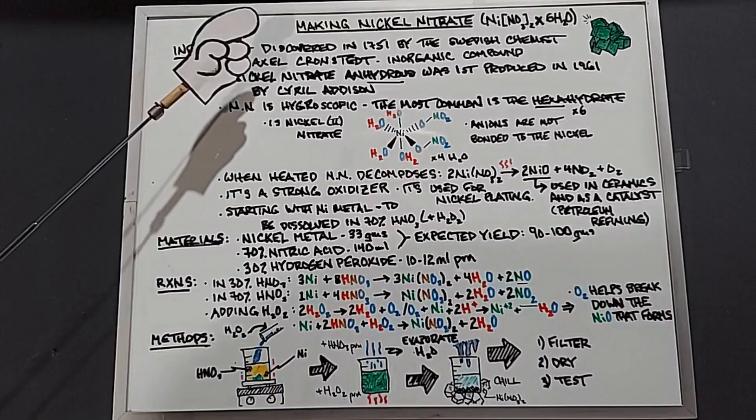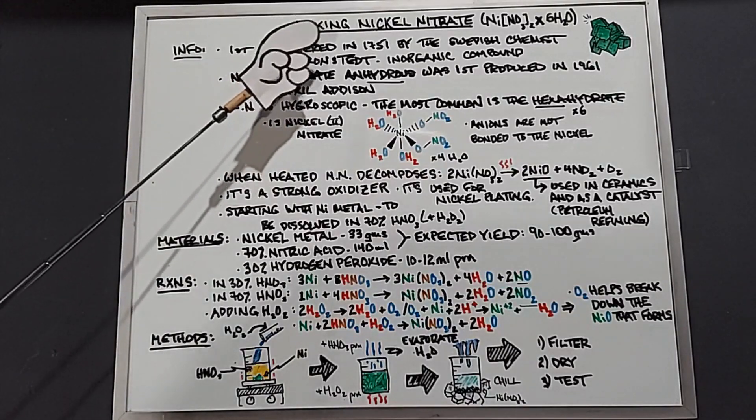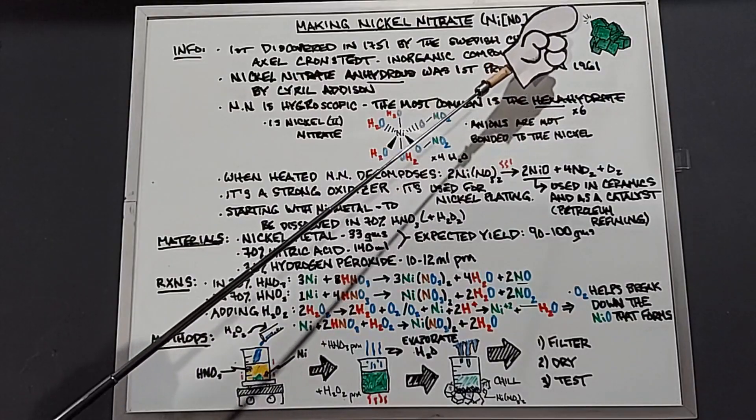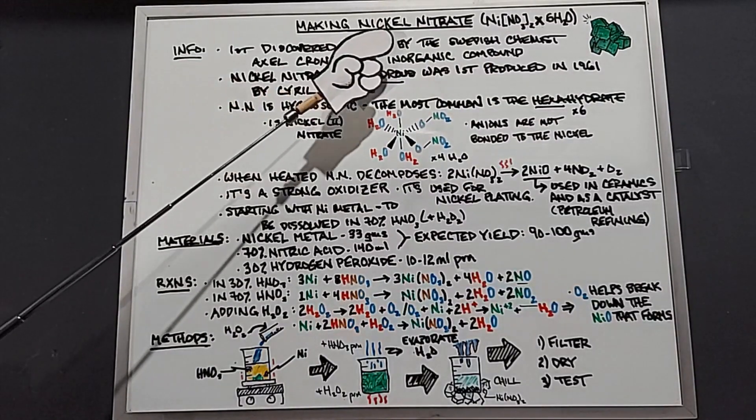If you're on your phone, tablet, or computer, which of course you are, let's talk about making some nickel nitrate. The most common form of it has six waters in it. It was first discovered in 1751 by the Swedish chemist Axel Kruinstead.